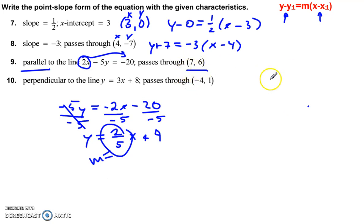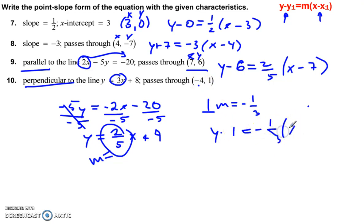Passes through this point. And so y, x and y, minus 6 is equal to 2 fifths times x minus 7. Alright. Perpendicular means the slope is going to be opposite reciprocal. Flip and negate. So negative 1 third. Passes through these two points. Fill in the blanks. Y minus 1 is equal to negative 1 third x plus 4. Alright.